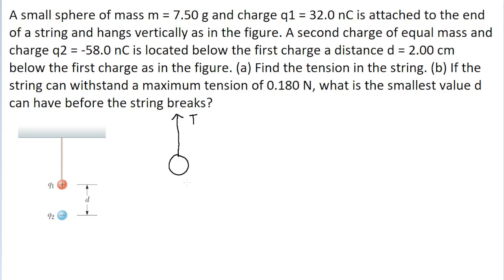There are two different forces pulling on the sphere downwards. First, there is the force due to the sphere's weight, which has a magnitude of Mg — that's the mass of the sphere multiplied by the gravitational acceleration. And there's also going to be the attractive electrostatic force pulling down on the sphere, due to the presence of the negatively charged sphere, sphere two. We'll call this F sub E, as it is the electrostatic force.